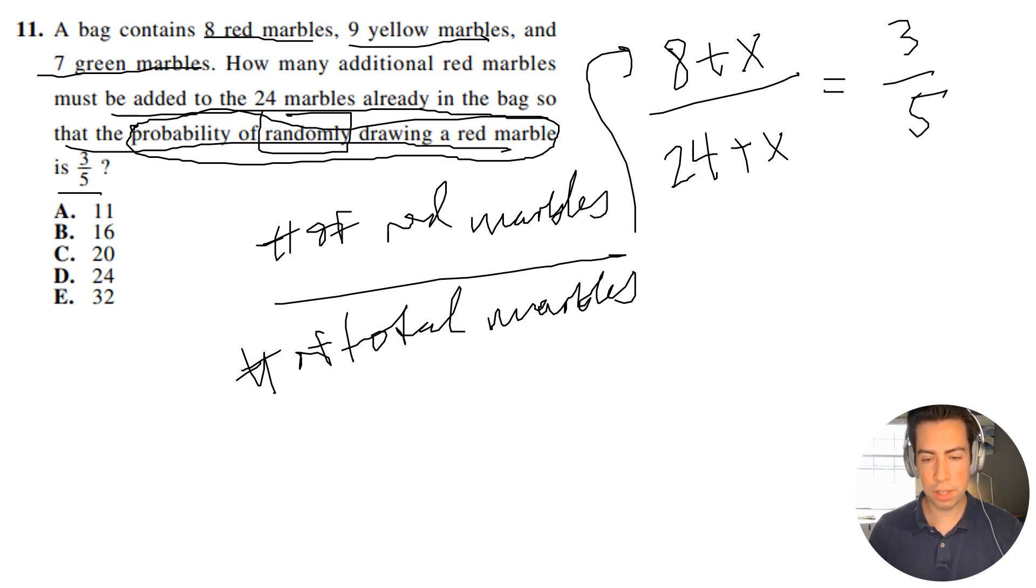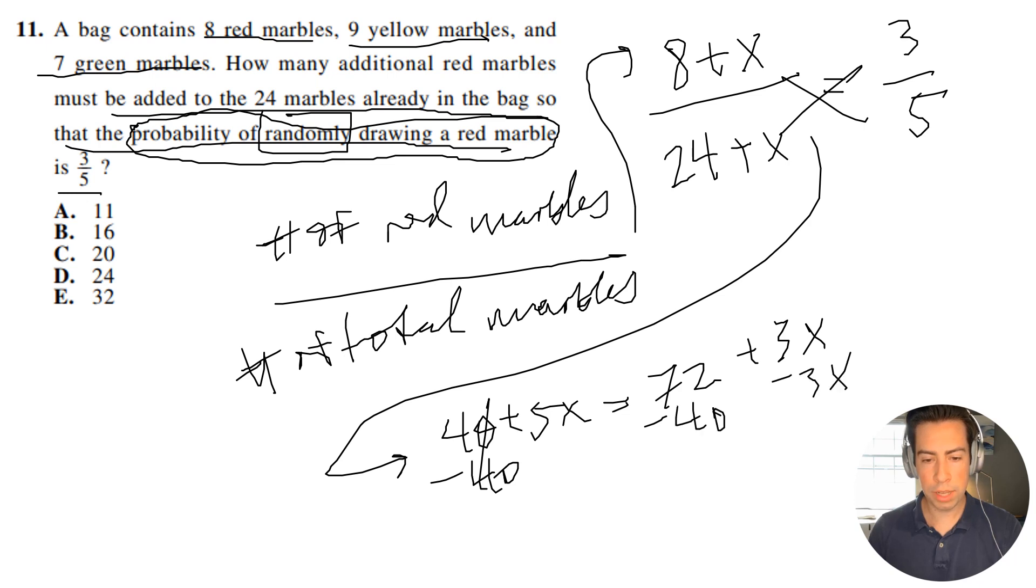All right guys, so with this information, what I'm going to do is just go ahead and cross multiply. I'm going to multiply like that, and let's bring it down here. So it's going to be 40 plus 5X equals, let's see, 24 times 3. That's going to be 72 plus 3X. Now I'm going to subtract off 40, and then I'm going to subtract off 3X. So I'm going to get 2X equals 32, and then divide both sides by 2, and I will get X equals 16.